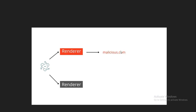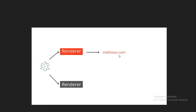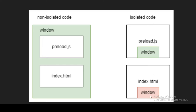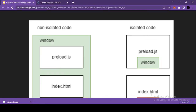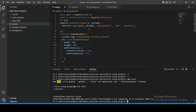That is certainly not a good thing, because as we already saw with the malicious code example, the malicious website will also have access to the window object accessible to the preload script. On the other hand, looking at the isolated code side, the window object of the preload script is completely different from the window object of index.html. This will also avoid confusion or conflicts between two different scripts.